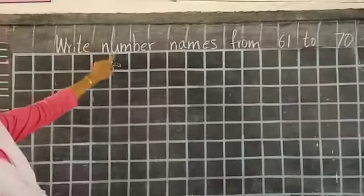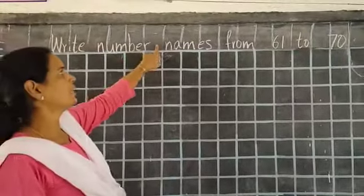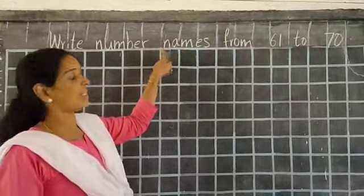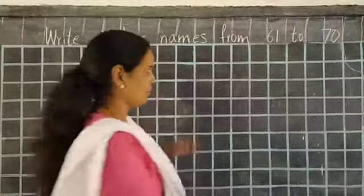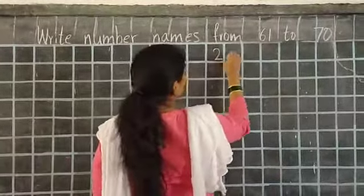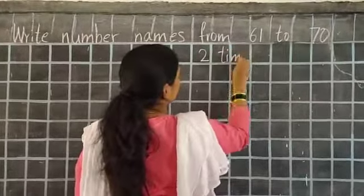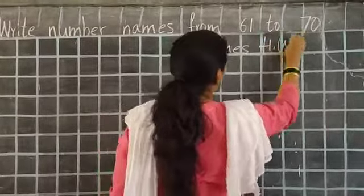Write heading: number names. We will write number names from 61 to 70. How many times will we write homework children? Two times. Two times homework.